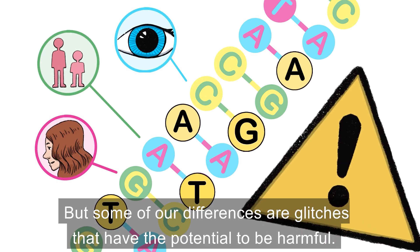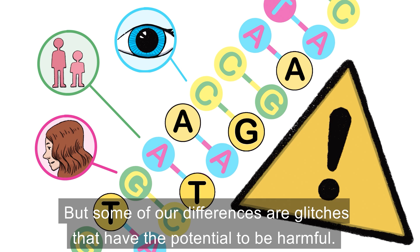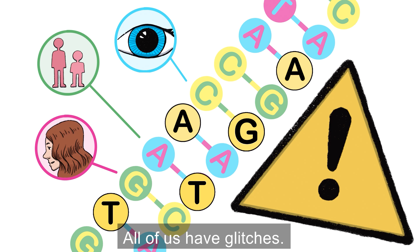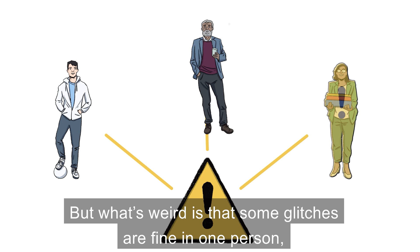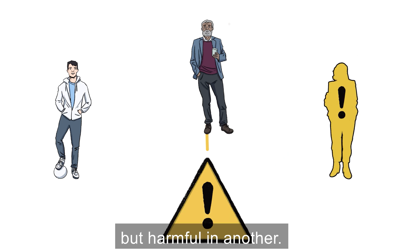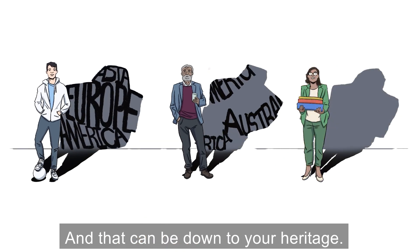But some of our differences are glitches that have the potential to be harmful. All of us have glitches. But what's weird is that some glitches are fine in one person but harmful in another. And that can be down to your heritage.